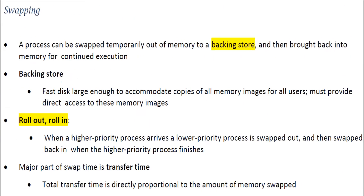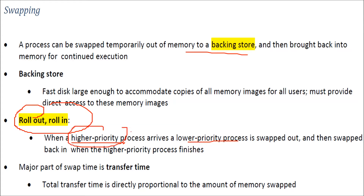Swapping is nothing but a process being swapped temporarily out of memory to the backing store, and then brought back into memory for continued execution. This is simply called roll-in and roll-out. When a higher priority process comes in, the lower priority process is swapped out and space is made for the higher priority process.